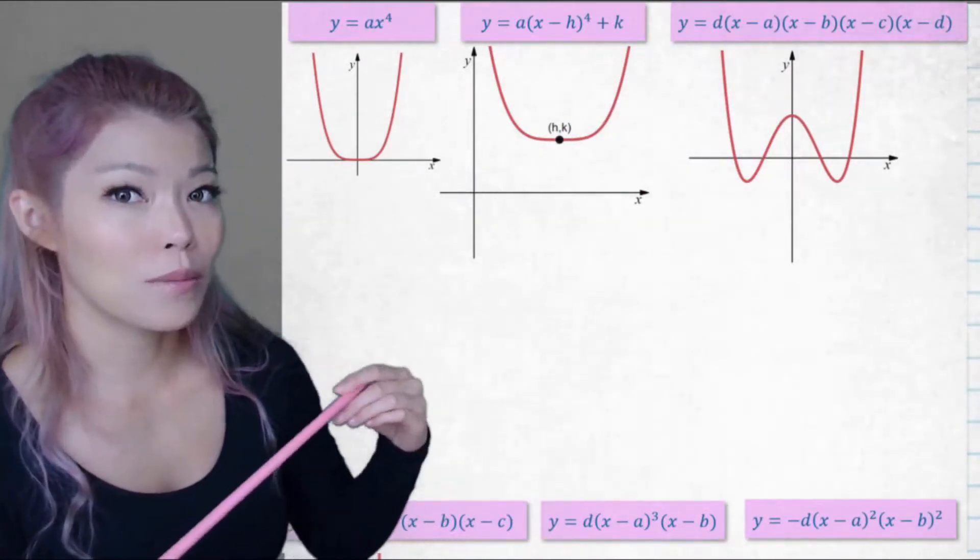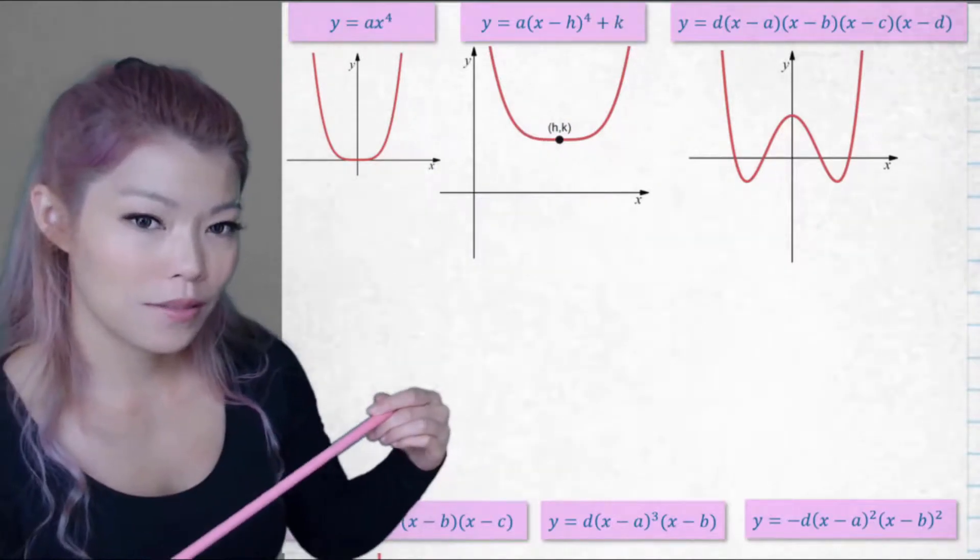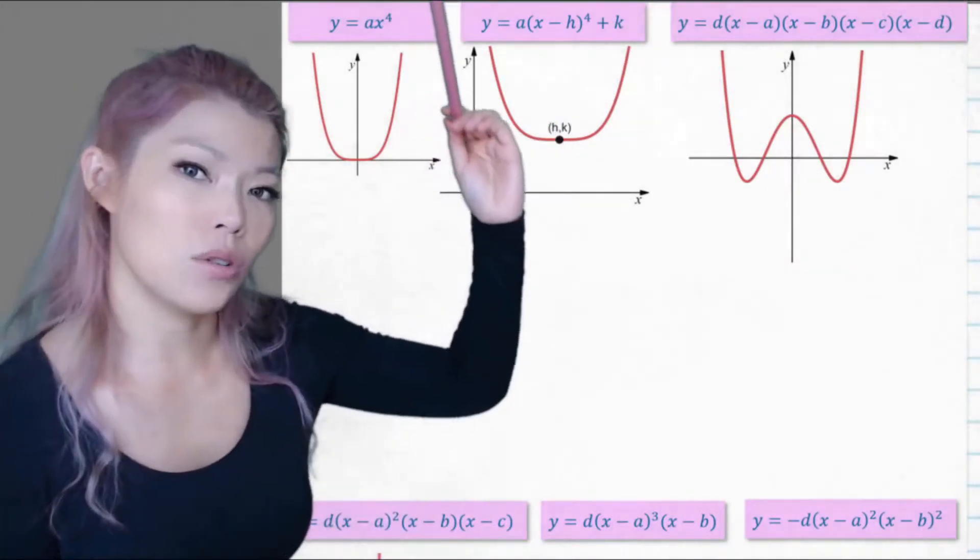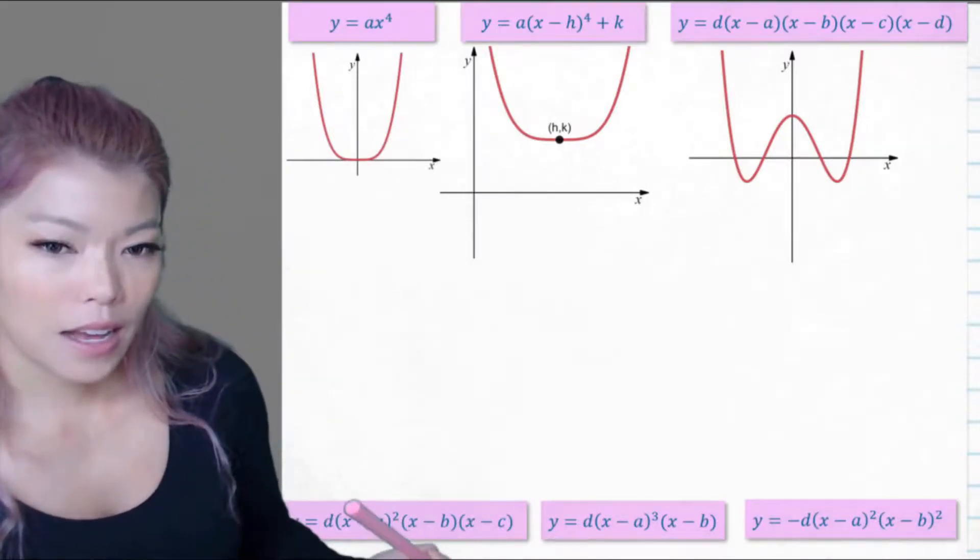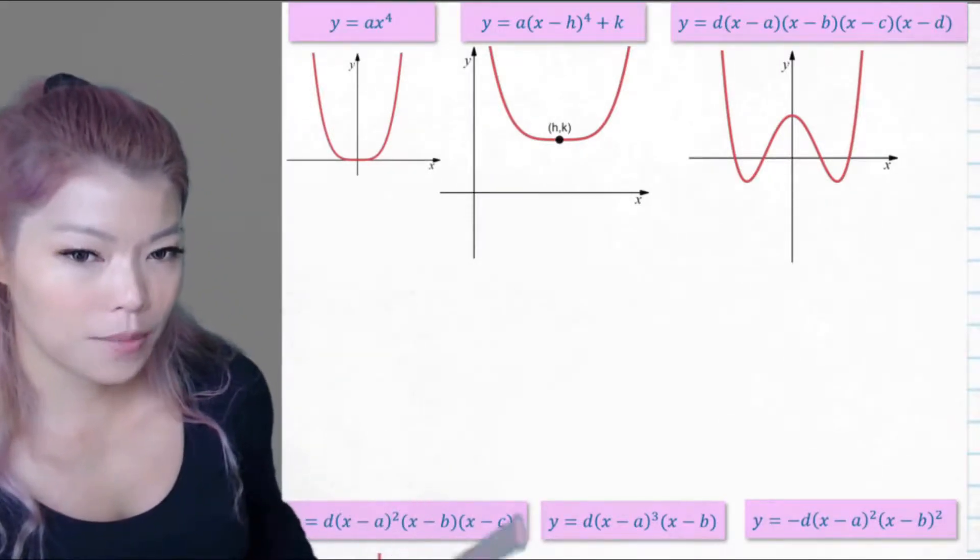Whereas a cubic, remember it's like a linear, positive means going up like a linear or negative going down. Turning point, intercept, intercept.